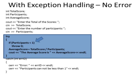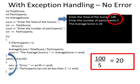Here is what happens when we have good numbers. The total score again is 100, the number of participants is 5. The denominator is going to be 5, so we won't throw an error. We'll go ahead and do the divide and then print out the display saying the average score is 20, and we'll skip the catch block because we didn't throw an error.